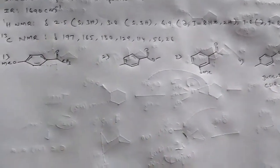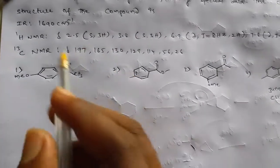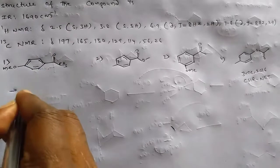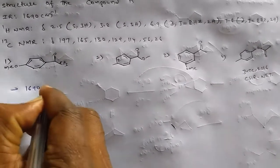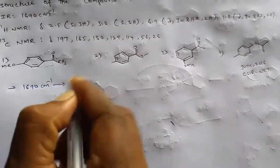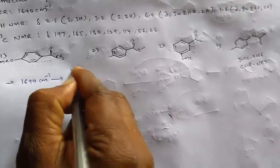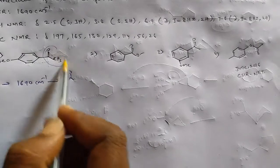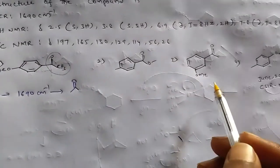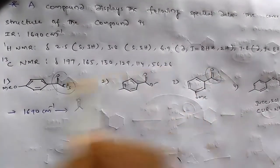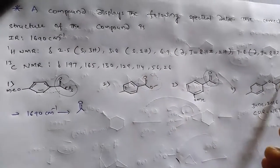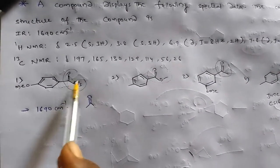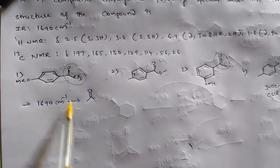First, observing the IR at 1690 cm⁻¹ — this resembles a keto functional group. The keto functional group is present in the first and third options. The other two options are esters, so we need to focus on the keto functional group since 1690 absolutely resembles a keto.